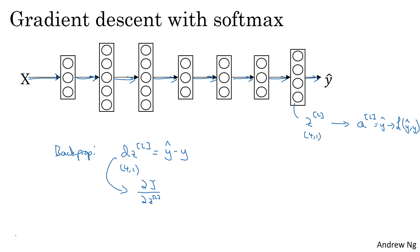And so this, going by our usual definition of what is dZ, this is a partial derivative of the cost function with respect to ZL. If you're an expert in calculus, you can try to derive this yourself, but using this formula will also just work fine if you ever need to implement this from scratch. But with this, you can then compute dZL and then sort of start off the back prop process to compute all the derivatives you need throughout your neural network.